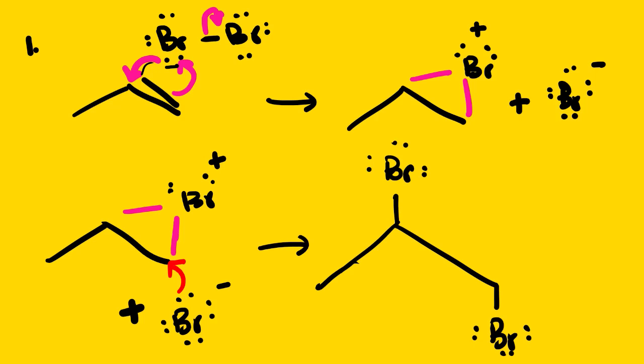we have an anti-addition. There is a lesson video whereby I introduce the stereochemistry of these mechanisms. It is anti, as you can see from this example. They don't add, we don't add them on the same side. We have syn addition and anti-addition. Anti-addition